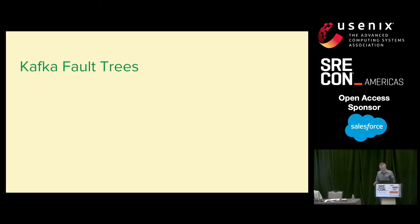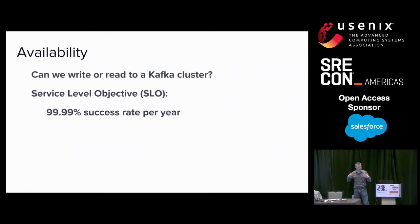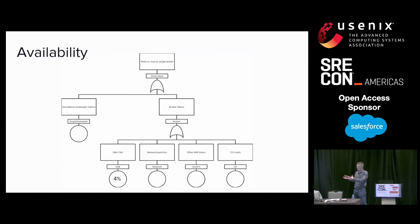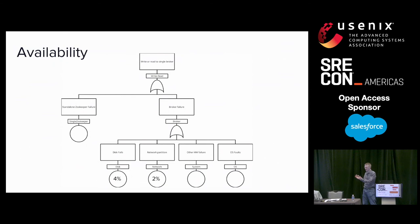So now that we have the basics covered, let's dive into the meat of the talk, which is defining availability SLOs for Kafka. Let's say that we want to target four nines of success rate per year on our Kafka brokers. The first step we'll take is to start simple and have a single broker and a single zookeeper. Let's also assume that our brokers are running on rotational disks.